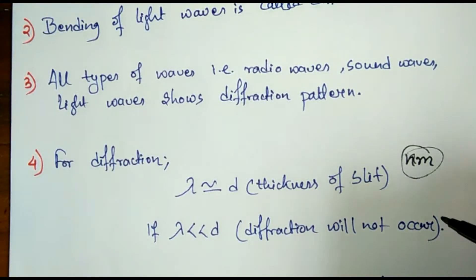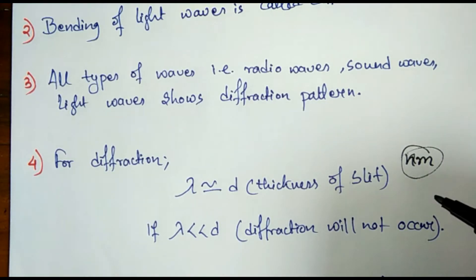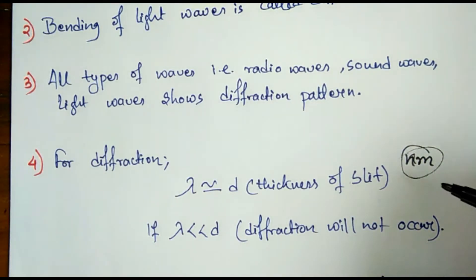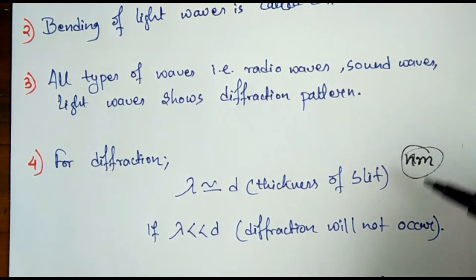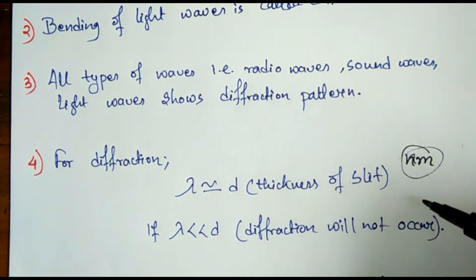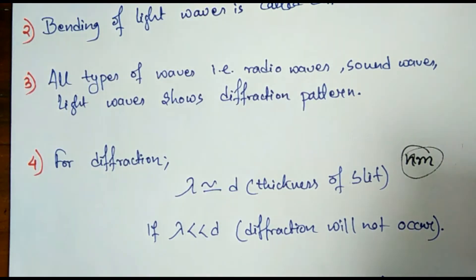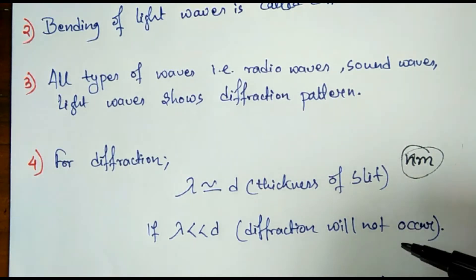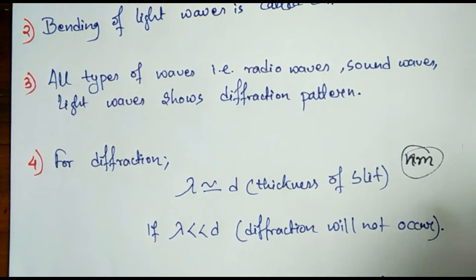The obstacles we encounter while passing light are in meters, so there is a huge difference. It is not possible for light of wavelength in nanometers to diffract around an obstacle in meters. But in the case of sound waves, the wavelengths are already in meters and can easily pass through obstacles also in meters. That is why we cannot see diffraction of light in day-to-day life, but we can see diffraction of sound waves.